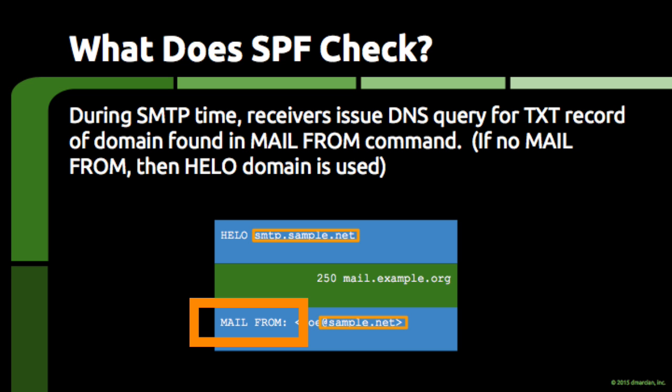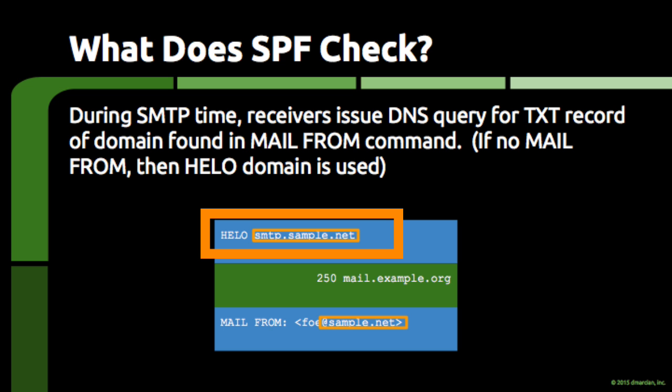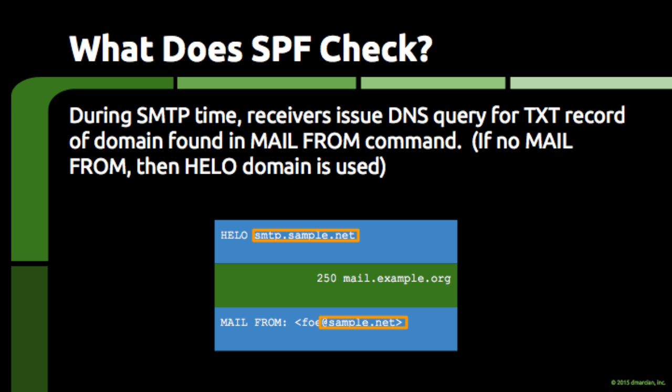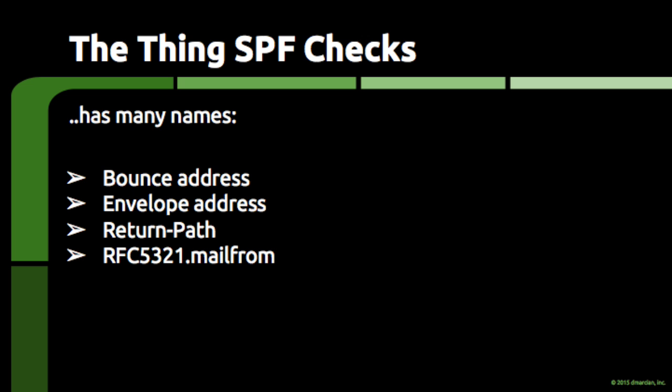If this address isn't present — as can happen if the email is a special kind of email known as a delivery status notification — then SPF falls back to checking the host name that the sending server introduced itself as when the SMTP conversation first began. For the vast majority of the time, though, the address found in the mail from command is what is checked by SPF. The thing SPF checks is known by quite a few other names: the bounce address, because it's where bounce messages are supposed to go; the envelope address, because much like a piece of postal mail, the address is on the outside of the content; the return path, because the address gets copied by the receiving email server into the email itself as the return path header; and when precision is required, as the rfc5321.mailfrom field.